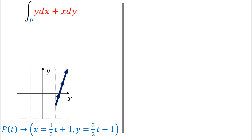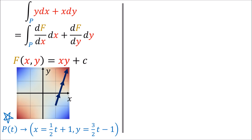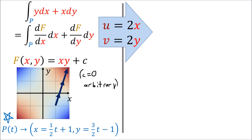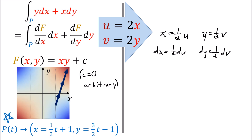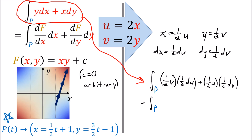Now let's go through the 2D example. We have a path integral over 2D space, and we deduce that f must equal x times y plus some constant c. Changing coordinates with u equals 2x and v equals 2y means x equals one-half u, y equals one-half v, dx equals one-half du, and dy equals one-half dv. The new integral becomes one-quarter v du plus one-quarter u dv.